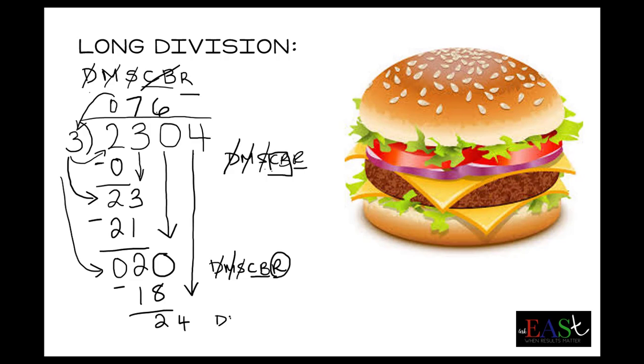So do it again. Does McDonald's sell cheeseburgers raw? 3 into 24, because we are dividing again. 3 times what gets you to 24? 3 times 8. So you put 8 on top of the number we're working on.